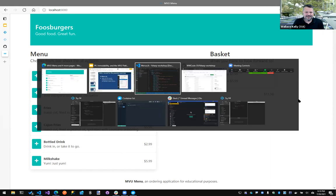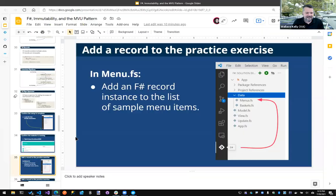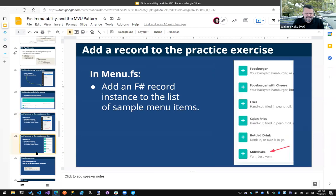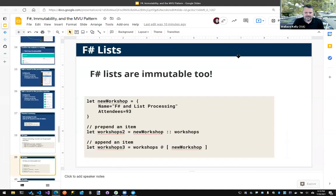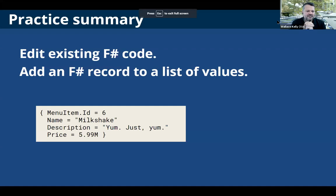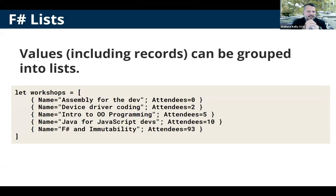In this set of practice slides, we've edited existing F# code and added an F# record to a list of values. Let's briefly discuss F# lists: values including records can be grouped into lists, using square brackets. Here on the slide is a list of workshops — similar to that menu we were just editing. The curly braces define each record instance within the list.